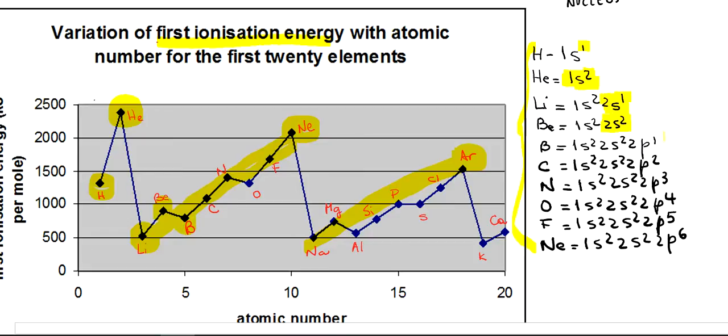In boron, we have the first element, I'm sorry, the first electron in the p level. So in the p level is very unstable with only one electron.